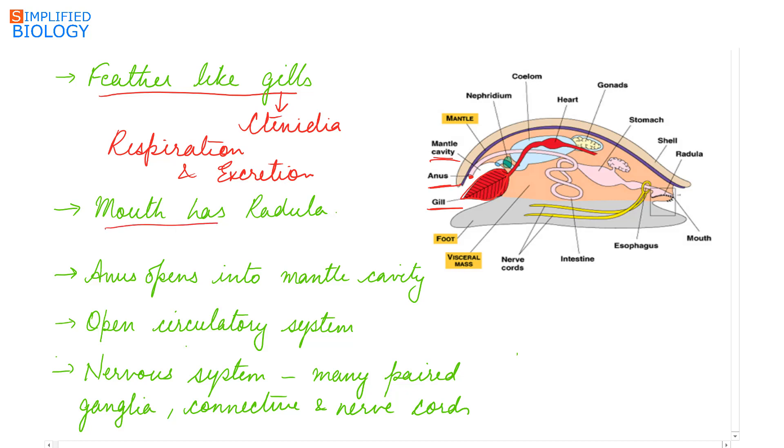The mouth has radula. Radula are file-like sharp rasping organs. They are meant for feeding and mastication of food.